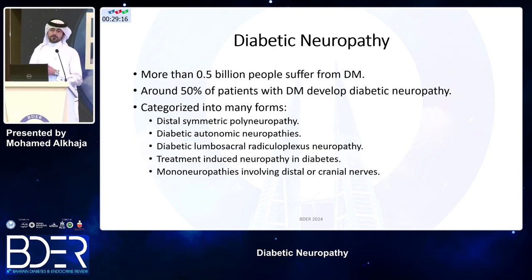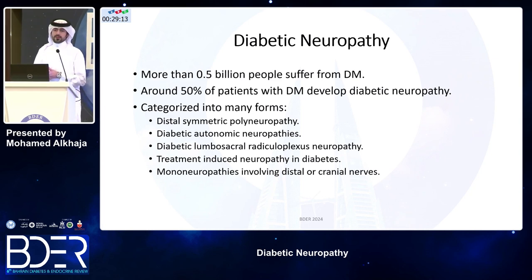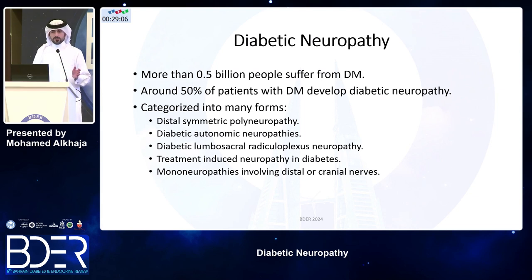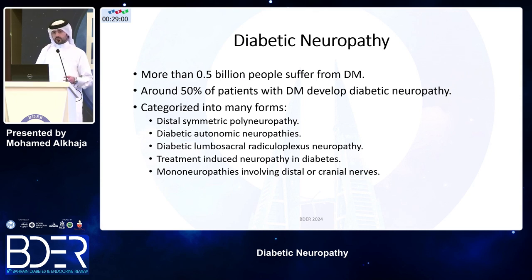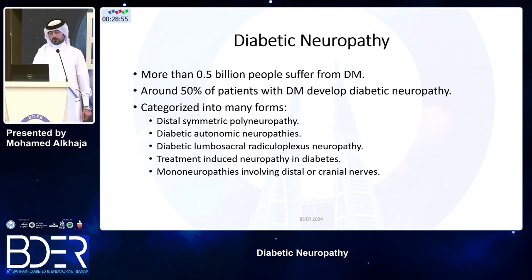Half a billion people suffer from diabetes, and half of these, at one point, will develop a neuropathy. There are many different types. The classic one, which you encounter many times in your clinics, is the distal symmetric neuropathy, but other types will be explained later on.